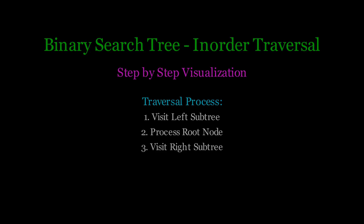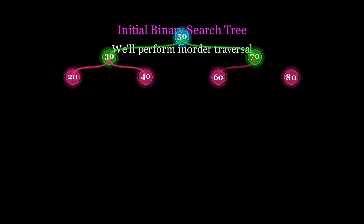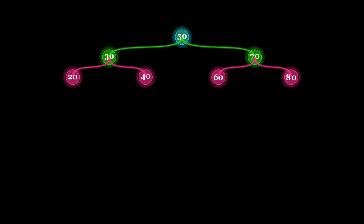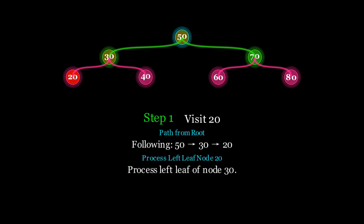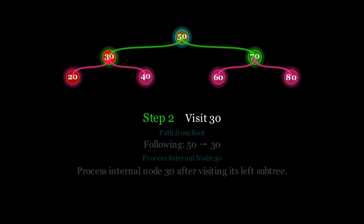Now let's visualize the traversal process. We start at the root 50 and move to the left child 30, and then to its left child again, reaching the node 20. Since 20 has no children, we process it first. The traversal so far is: 20.